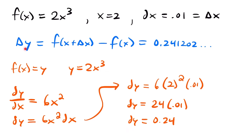Look at how close our two values are: delta y is 0.241202 and dy is 0.24 — very close. They would be even closer if we picked a smaller value for delta x, like 0.001. So as you pick a smaller value of delta x, dy is approximately equal to delta y. There's actually a really nice result that comes from this.